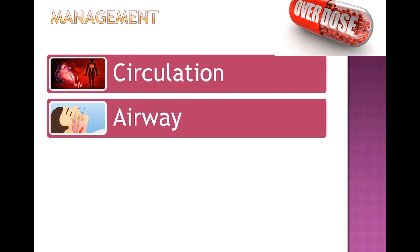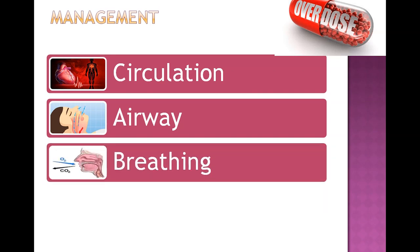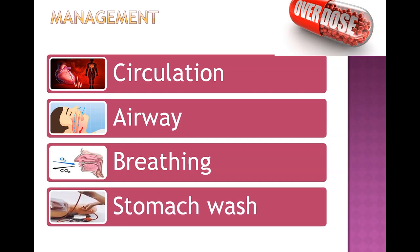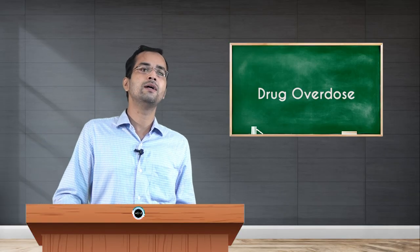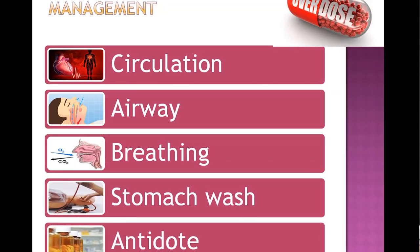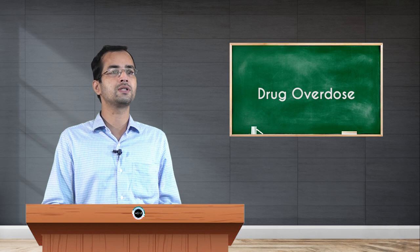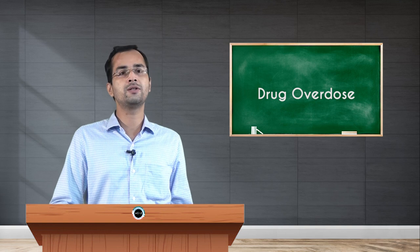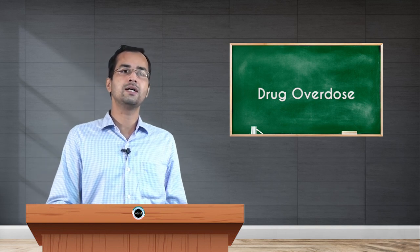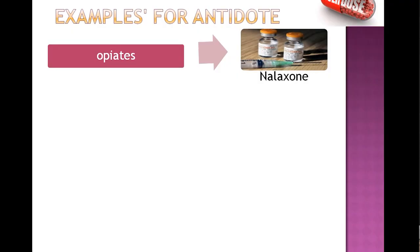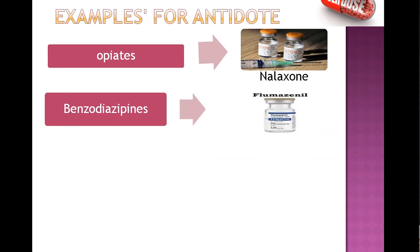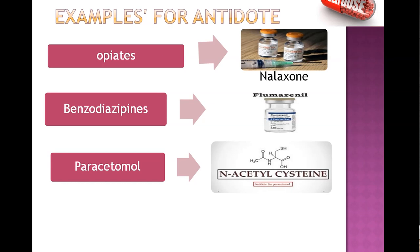In management, as with any emergency, we must first stabilize the patient by maintaining circulation, airway, and breathing. If the patient presents within one hour of ingestion, a stomach wash can be given along with activated charcoal, which absorbs the drug and prevents its absorption. Specific treatment involves giving an antidote: for opioid overdose, naloxone is the antidote of choice; for benzodiazepines, flumazenil; for paracetamol overdose, N-acetyl cysteine; for heparin, protamine. For atropine overdose, physostigmine is given.